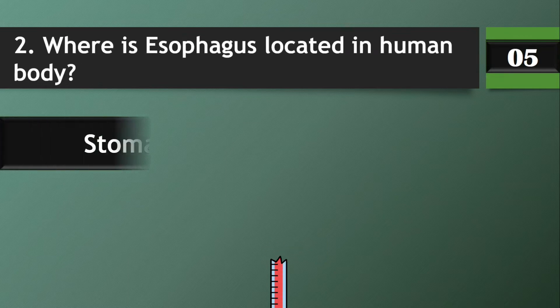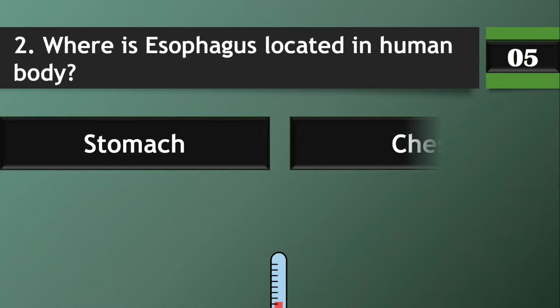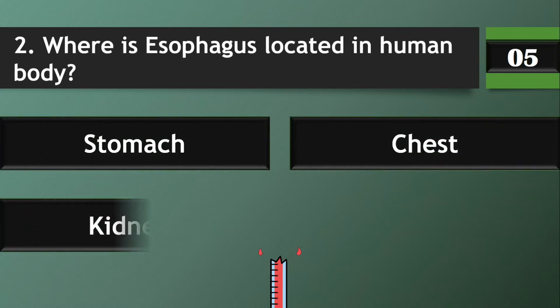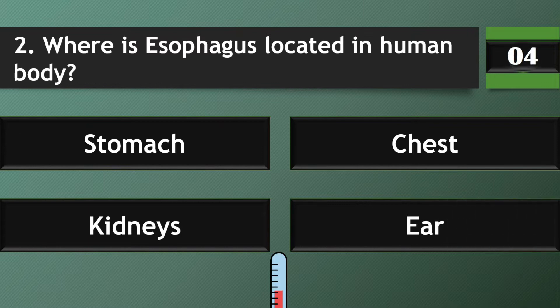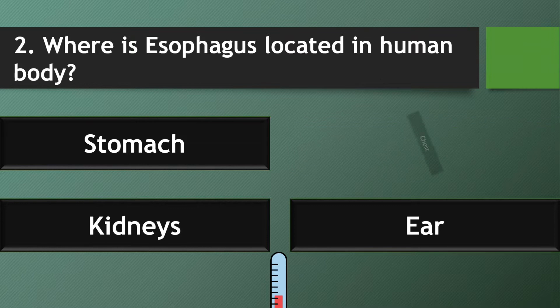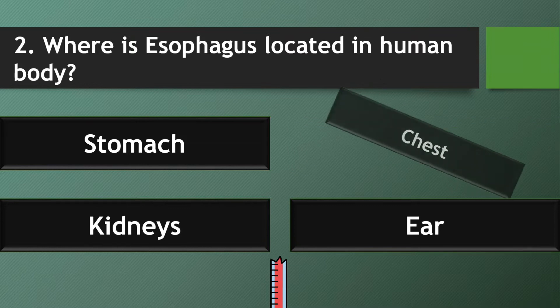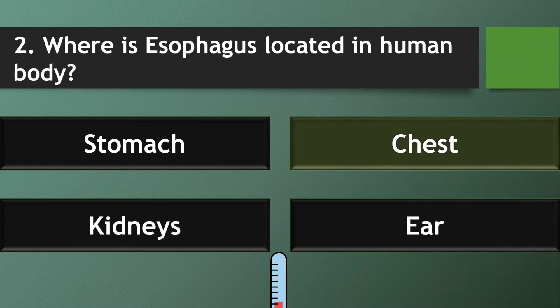Question 2: Where is the esophagus located in the human body? Answer: Chest.